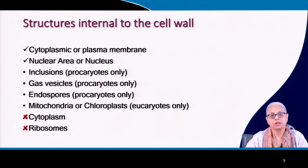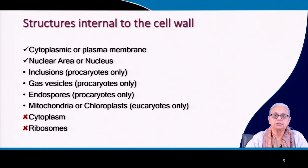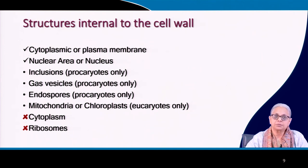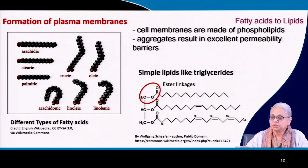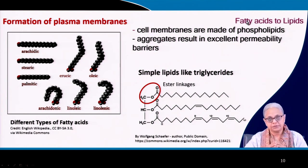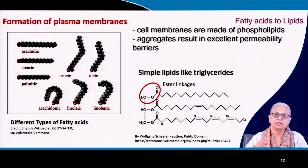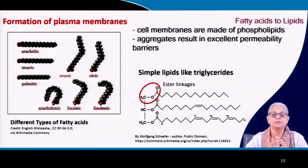Having seen the sizes and shapes of the different types of prokaryotic cells, we now come to the structures internal to the cell. We will look at the cell wall later, but we start with the cytoplasmic membrane or plasma membrane. The first thing is how is the plasma membrane formed? The building blocks are phospholipids, glycolipids, and sulfolipids — the same complex lipids we saw when discussing monomers, fatty acids, and triglycerides.